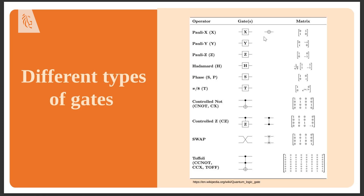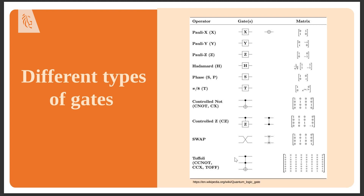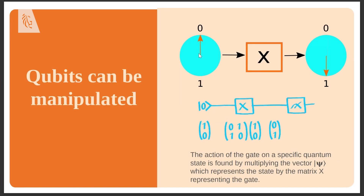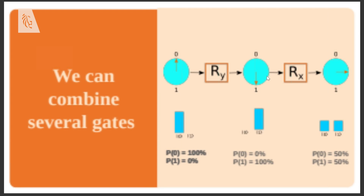There are all sorts of different types of gates. The most well-known ones are represented by different matrices. The Hadamard gate creates an equal superposition state. There are also various rotation gates on different axes. Below these single-qubit gates are multi-qubit gates — gates that operate on two qubits at the same time, shown here in red. You need these multiple-qubit gates to take proper quantum advantage of the qubits.